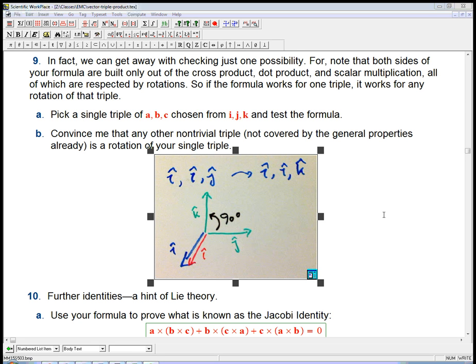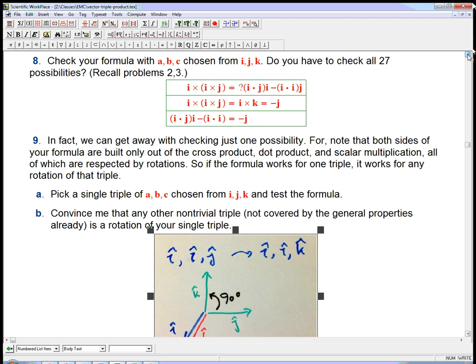In this part, I'll finish up the first viewpoint on the vector triple product, the kind of naive vector calculus viewpoint, before going on to the differential form approach. So at the end of the previous part, we had basically made sure that our guess was correct.